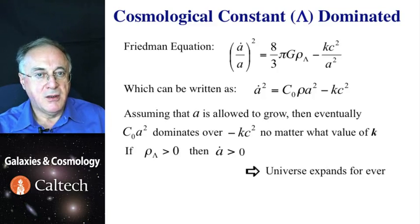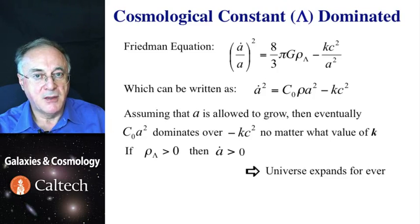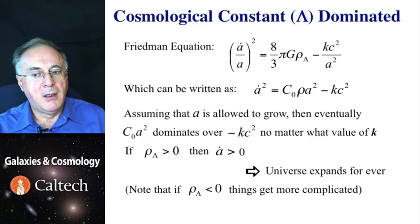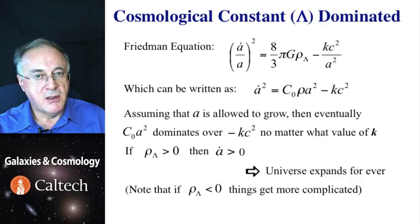So, if the energy density of the physical vacuum or cosmological constant is positive, then the first time derivative of scale factor will be positive, and that means that that universe will expand forever. Now, if the energy density of dark energy is negative, and that's actually possible, things will get to be a little more complicated. But, we need not concern ourselves with that at the moment.